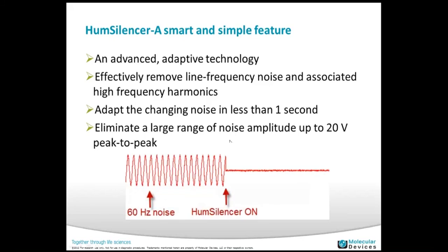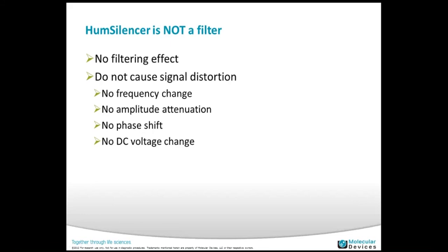Here you can see a beautiful 60 Hz noise signal. Once I turn on the Hum Silencer, the noise is gone — by just a single click, very easy and fast. Hum Silencer is not a filter. I know researchers worry that it might have a filtering effect on the acquired signal, but I'm going to demonstrate that it has no filtering effect and does not cause signal distortion — no frequency changes, no amplitude attenuation, no phase shift, and no DC voltage changes.